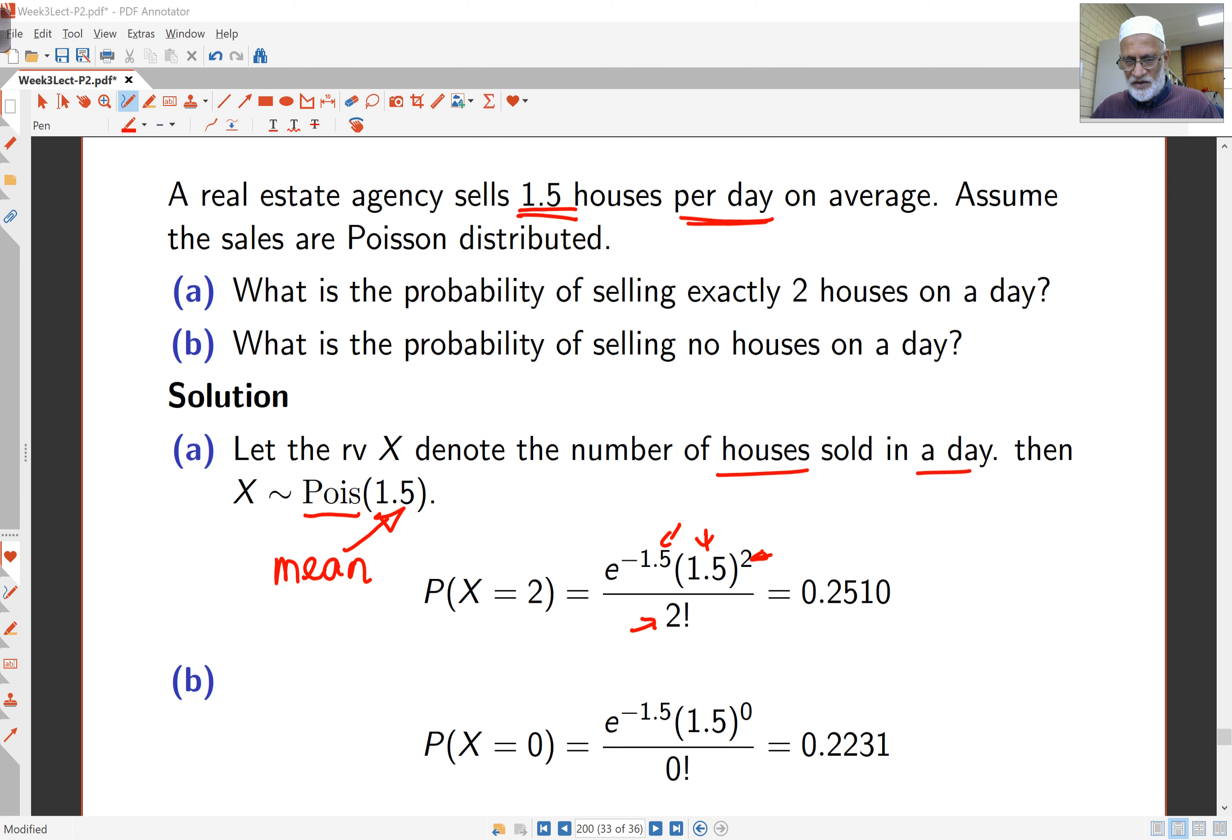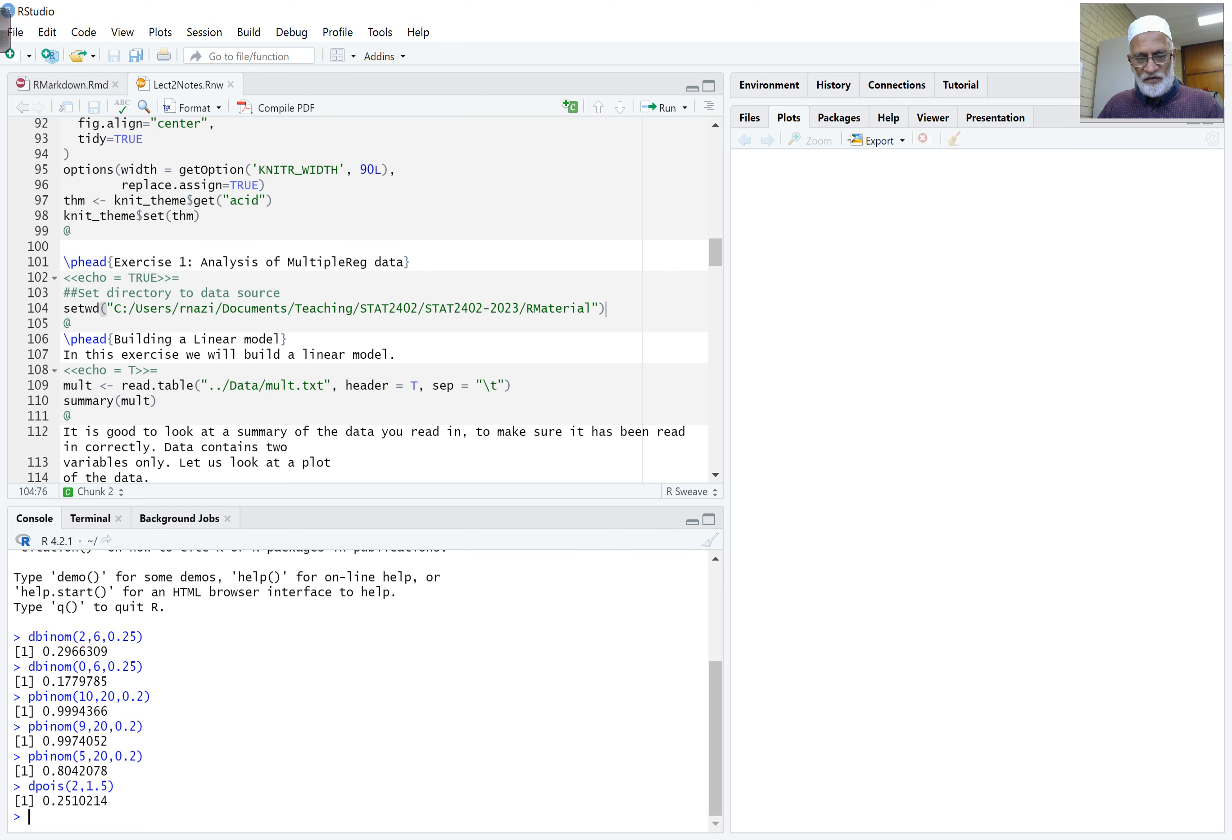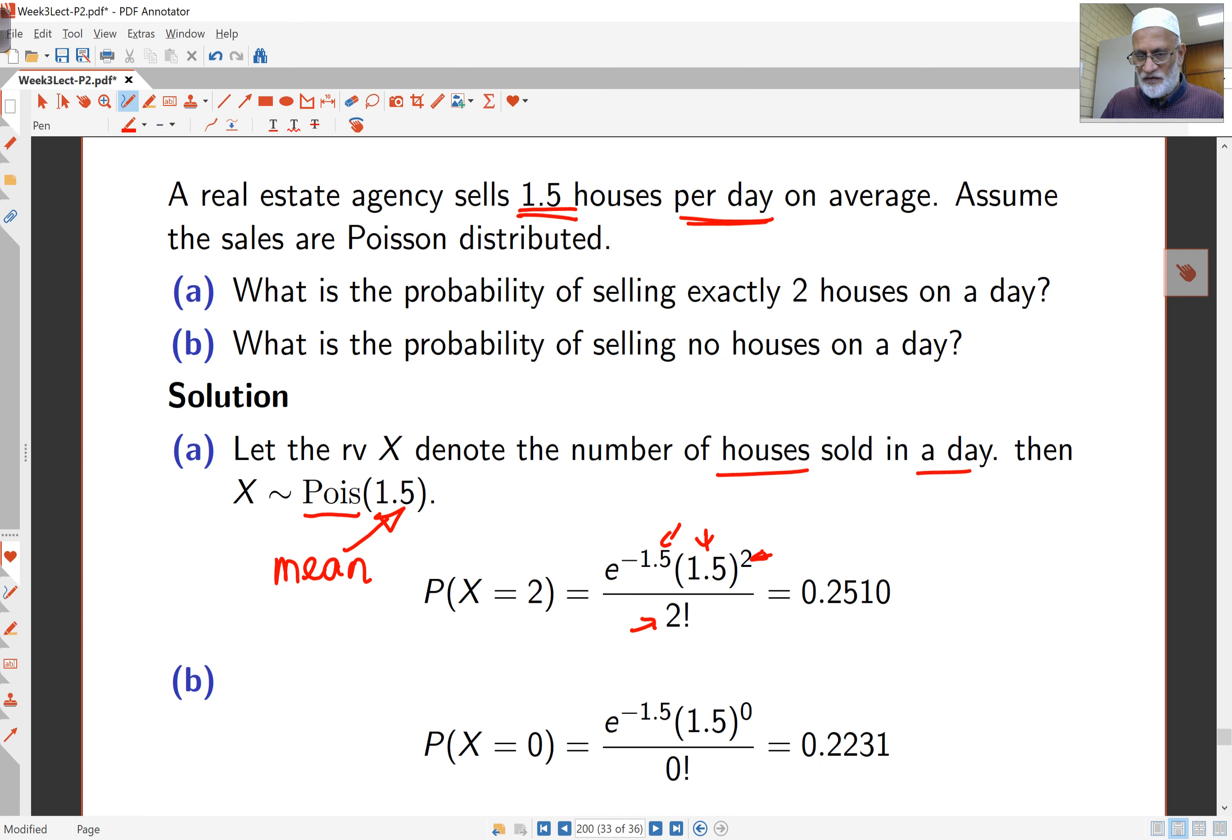Now, for the Poisson distribution, if I want a single probability, it's going to be dpois. And here I wanted two successes, two occurrences, and the mean number of occurrences is 1.5. So that gives me 0.2510 as before.